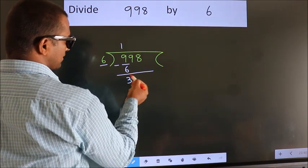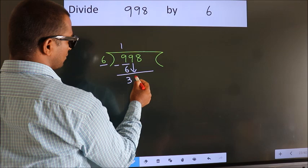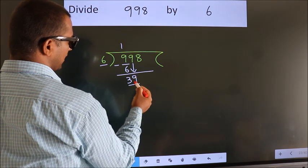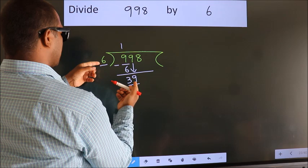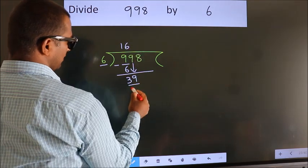After this, bring down the beside number. So 9 down. So 39. A number close to 39 in the 6 table is 36—6 times 6.